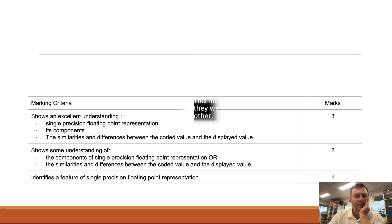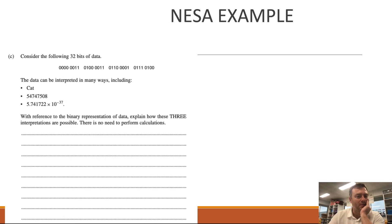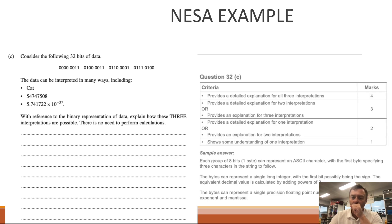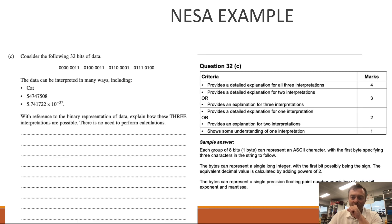So hopefully that's giving you some insight. And then there's what the marks would be if you did that question. Consider the following 32 bits of number data. The data can be represented many ways including the integer of that number and then the floating point that number. With reference to the binary representation of the data, explain how these three representations are possible. There's no need to perform calculations. Well there's the answer. So each group of the eight bits or one byte represents an ASCII character for the first one, with the first byte specifying the three characters in the string to follow. The bytes represent a single long integer, the first bit possibly being the sign. And then the bytes of the next one is the floating point number with the exponent, the sign bit and the mantissa.